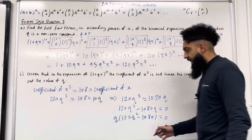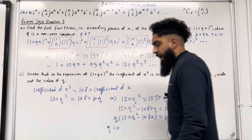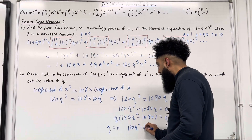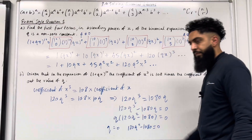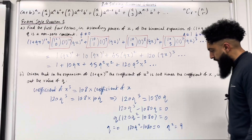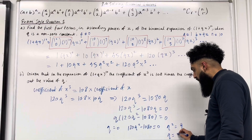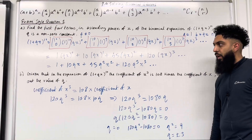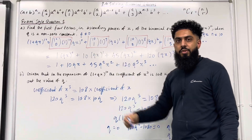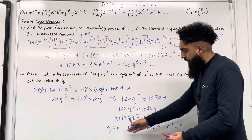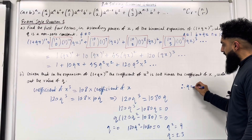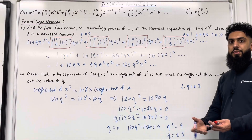Let's take out a factor of q: q(120q² − 1080) = 0. So one solution is q = 0. To find the other solution, solve 120q² − 1080 = 0, giving q² = 9, so q = ±3. But the question states q is a non-zero constant, so we must reject q = 0. Therefore q = ±3. There are two solutions for q.